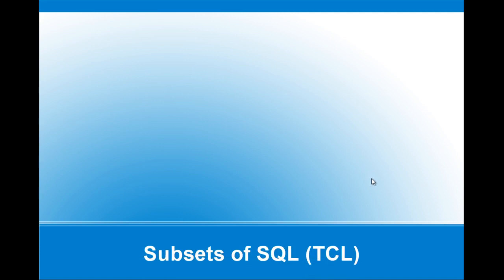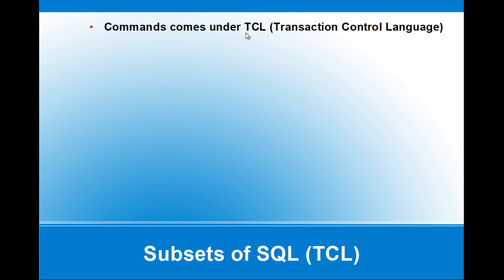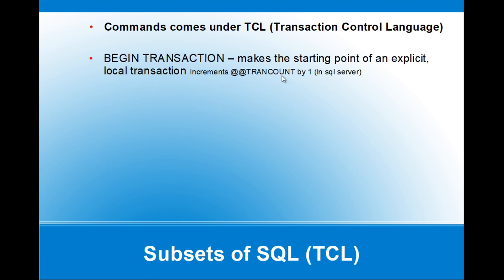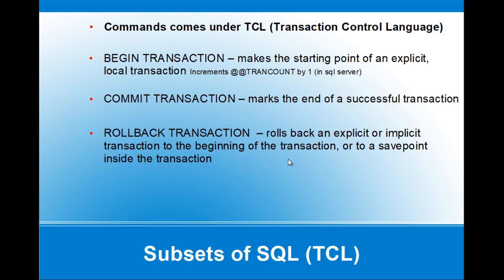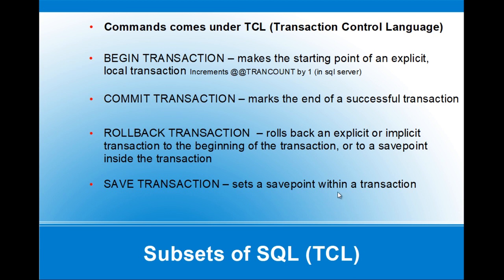The next one is TCL — Transaction Control Language. BEGIN TRANSACTION marks the starting point of an explicit local transaction and increments the system variable @@TRANCOUNT by one in SQL Server. COMMIT TRANSACTION marks the end of a successful transaction. ROLLBACK TRANSACTION reverts the values back to the start of execution, undoing any changes made — or if a save point is used inside the transaction, it rolls back to that particular point. SAVE TRANSACTION sets a save point within a transaction and offers a mechanism to roll back a portion of the transaction.